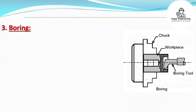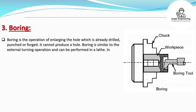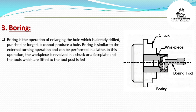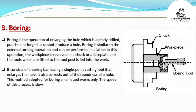Boring is the operation of enlarging a hole which has already been drilled, punched, or forged — it cannot produce a new hole. The workpiece is revolved in a chuck or face plate and the tool fitted to the tool post is fed into the work. It uses a boring bar with a single-point cutting tool to enlarge the hole and correct out-of-roundness. This method is used for small-sized work only, and the process speed is slow.